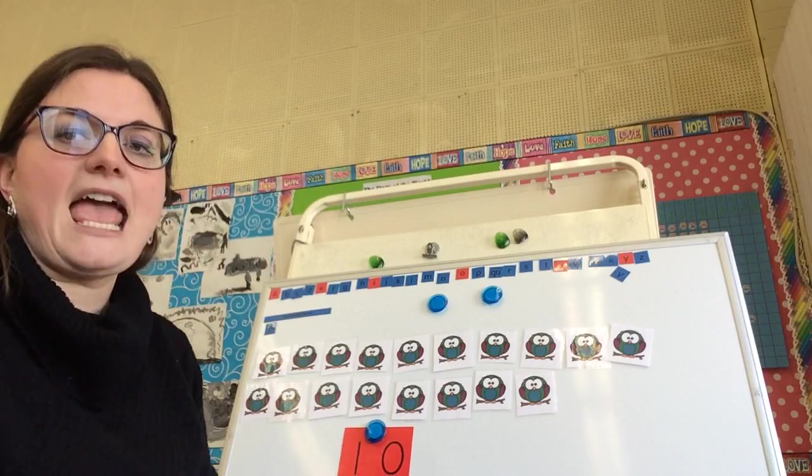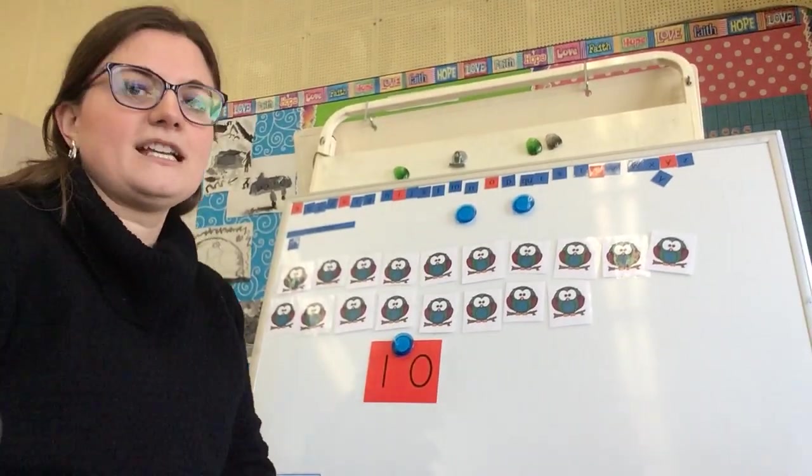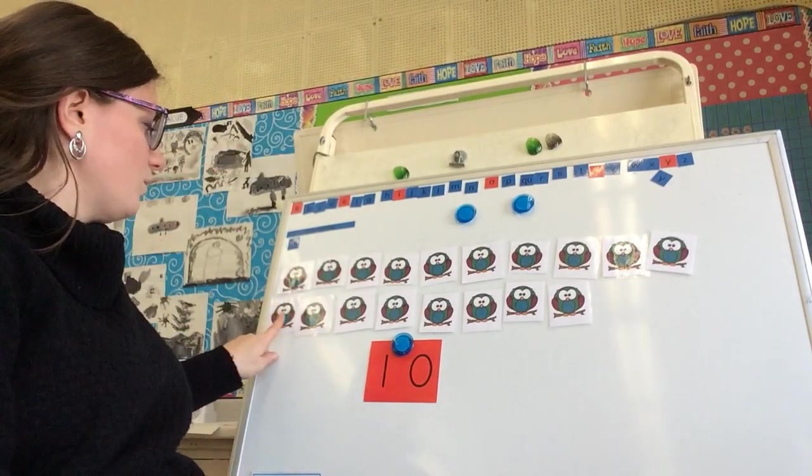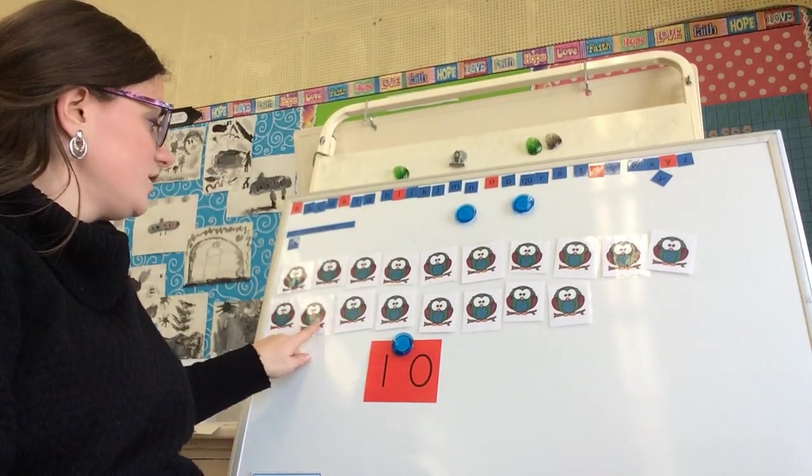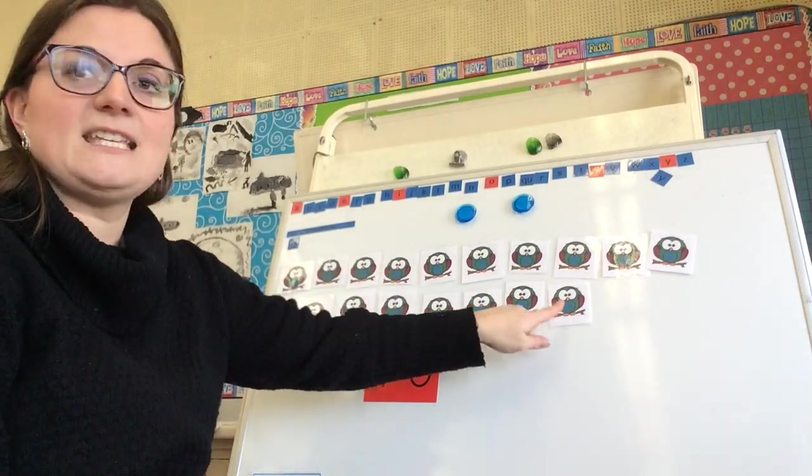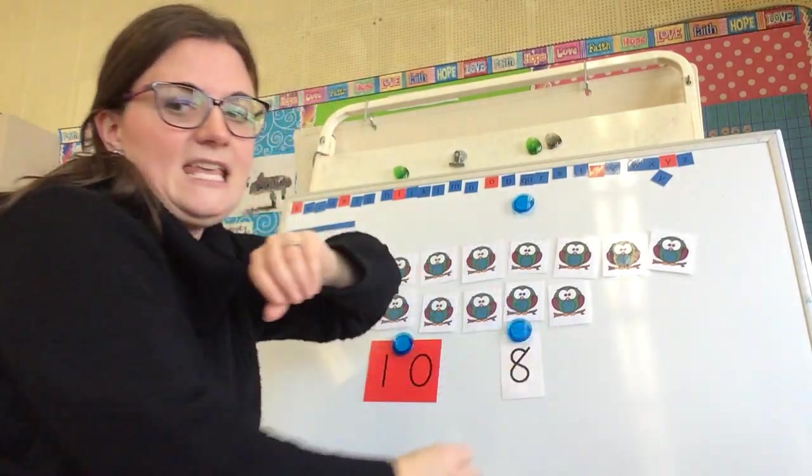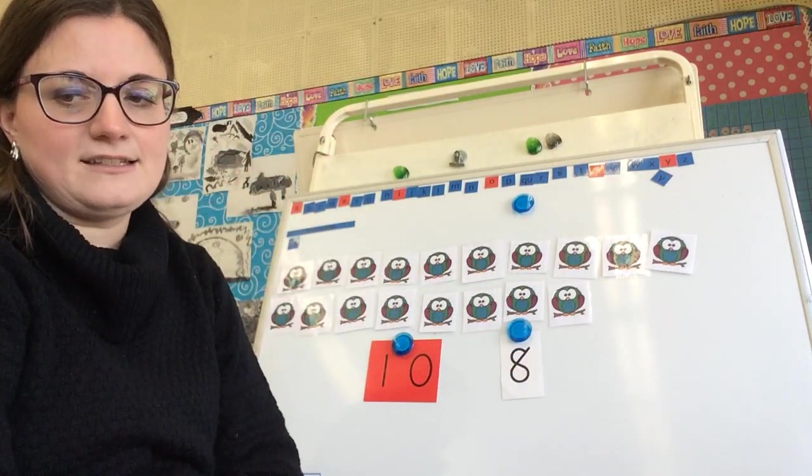And let's count how many do we have in our second row. Let's count. 1, 2, 3, 4, 5, 6, 7, 8. So we have 8 in our second row.